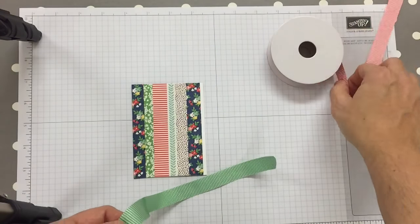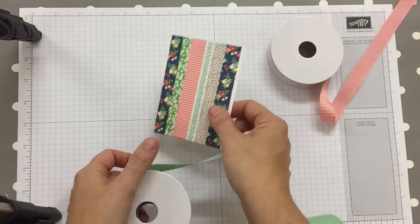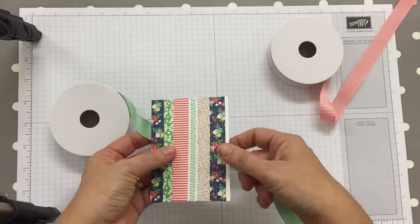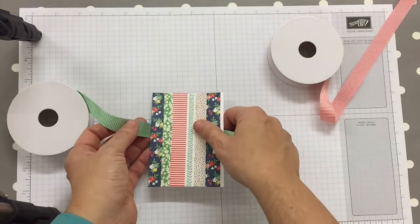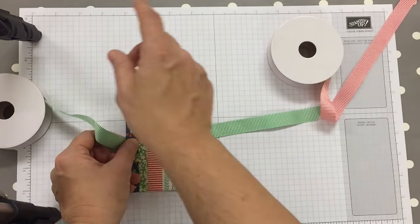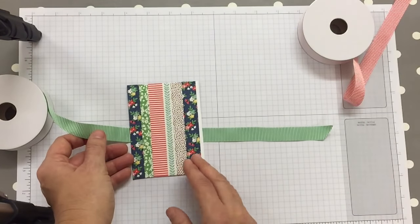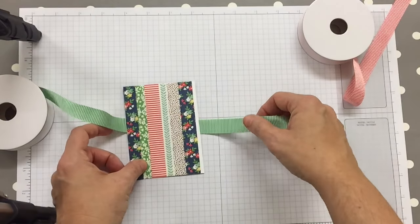Now I'm using here the Cucumber Crush striped ribbon from the annual catalogue. When I'm tying my bow, I always tie it upside down, and I generally, unless I've pre-cut it for a class, keep the loose end to the right.